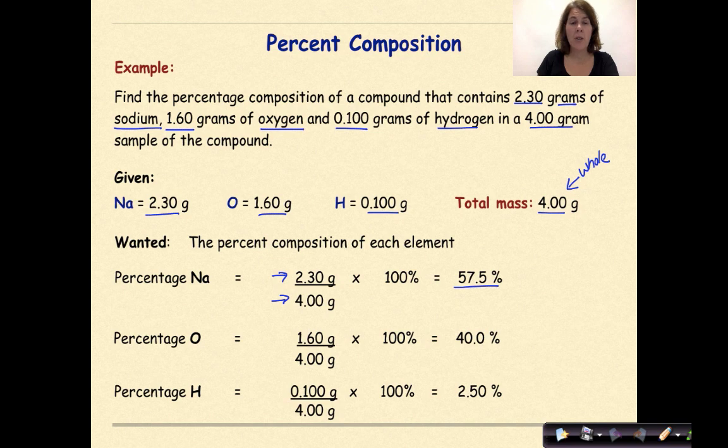For percentage of oxygen, they give us 1.60 grams over our total mass of 4 grams. Divide that out, multiply by 100 and that is 40 percent of our sample.